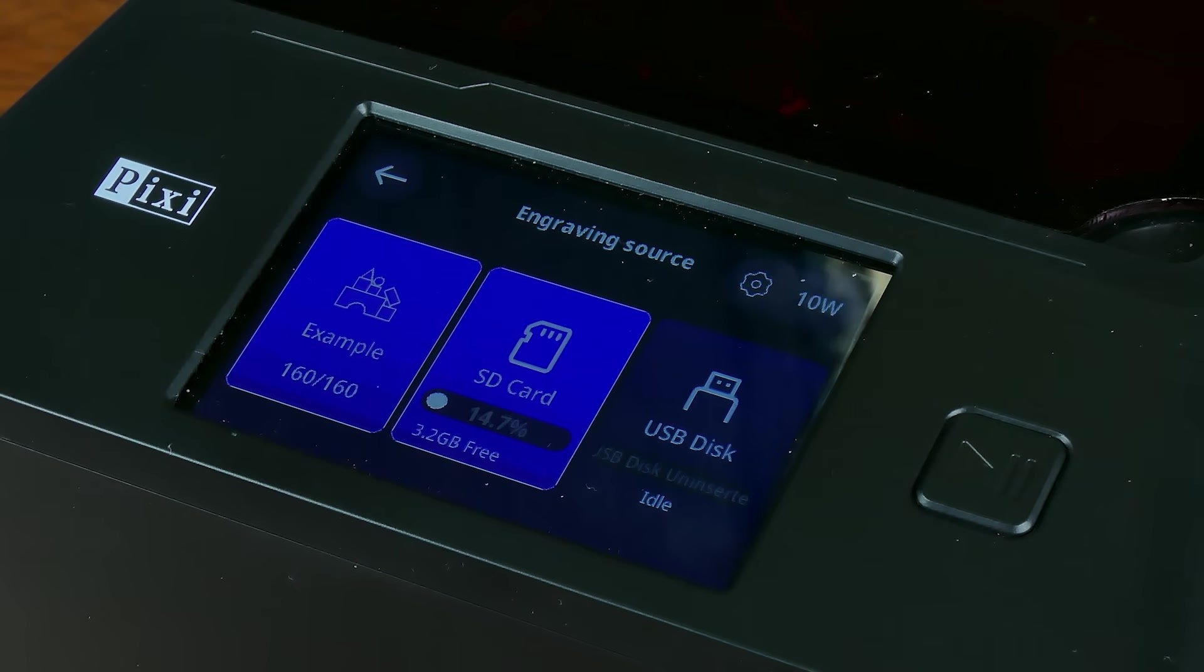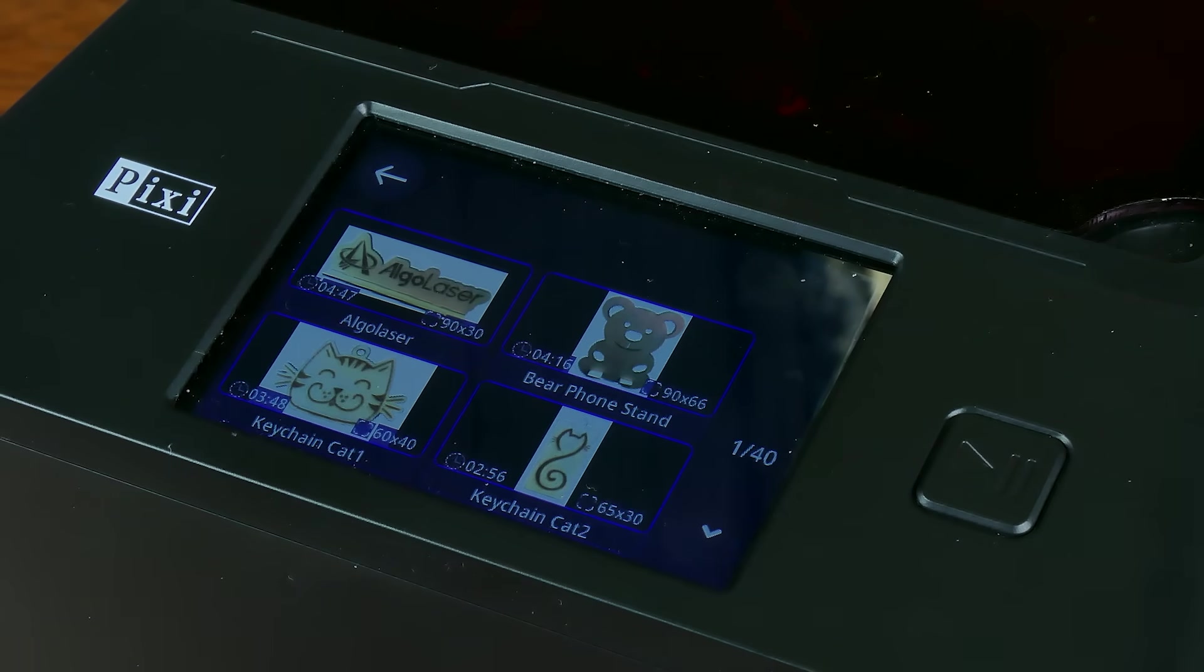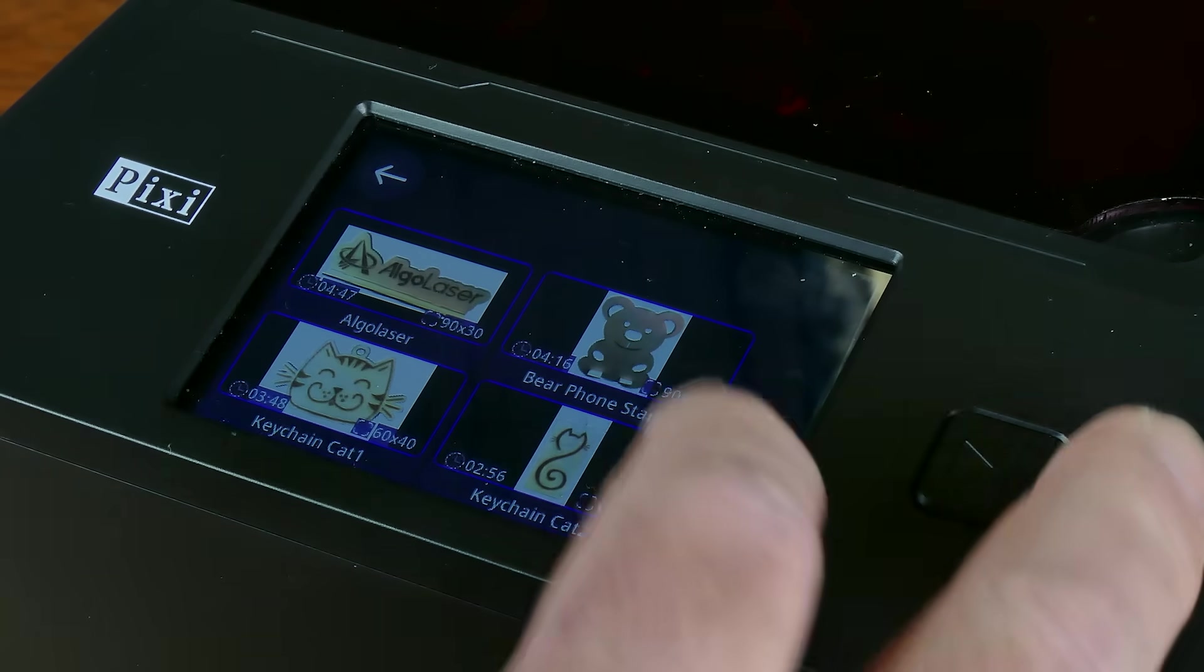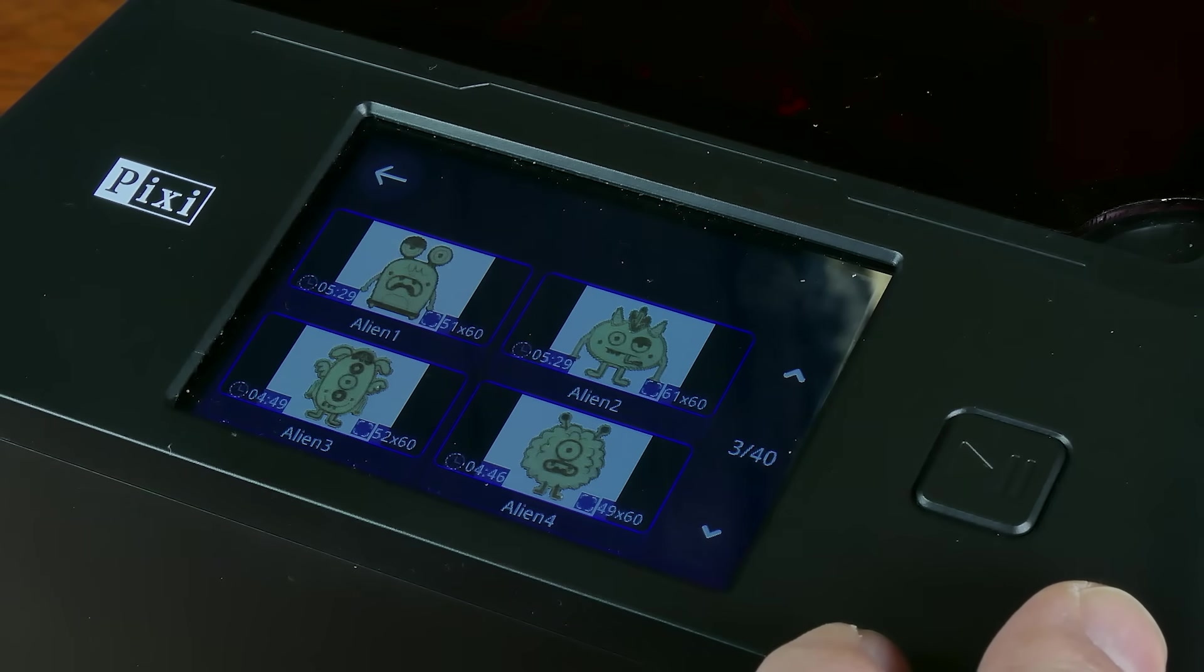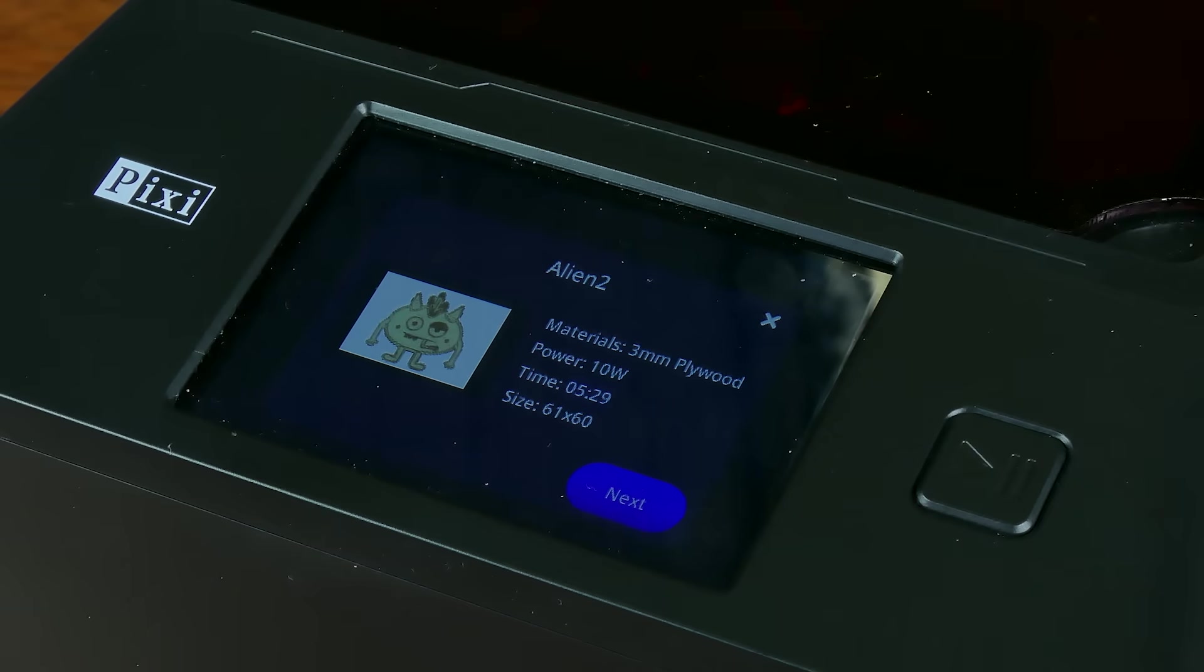Let's check out some of the onboard projects that they have in the machine. There are over 150 small examples that you can cut out instantly. I'm just scrolling through here to find something that's interesting and I've decided to go for that Alien 2 on the top right hand corner because I think that looks pretty funky. Now it's telling me I'm going to use three millimeter plywood with 10 watts of power. It's going to take me about five and a half minutes to cut.